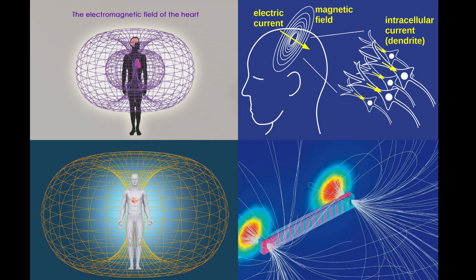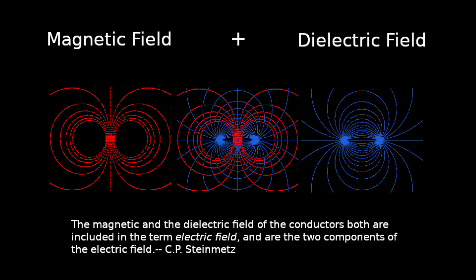Electric fields are ubiquitous and practically synonymous with life, being present in all environments, as well as all biological organisms, and many everyday man-made items. The electric field is an energy circuit, a union comprised of two essential components always: the magnetic field of space, the magnetic field, and the dielectric field.